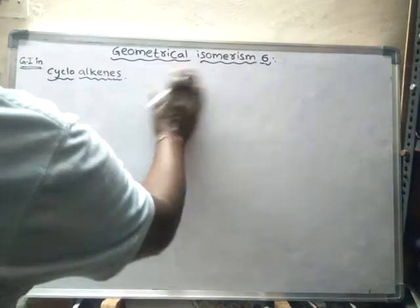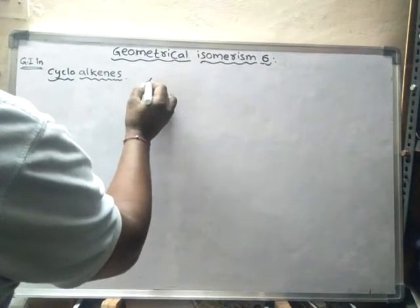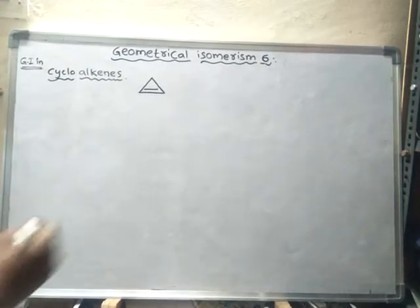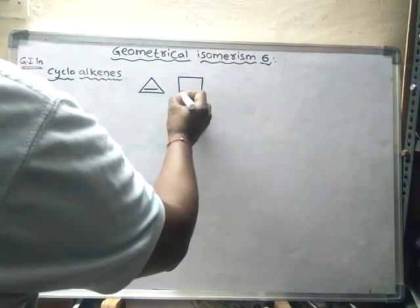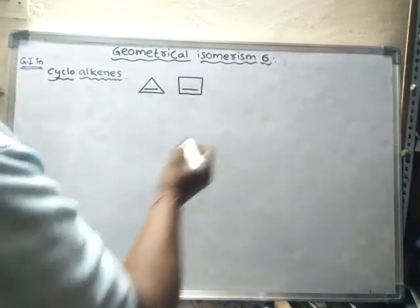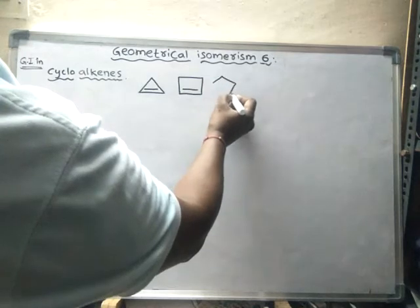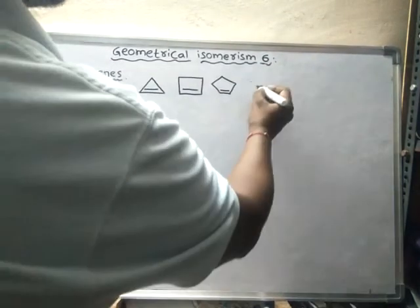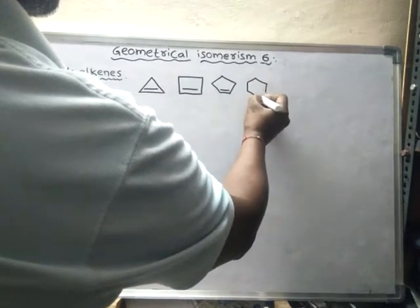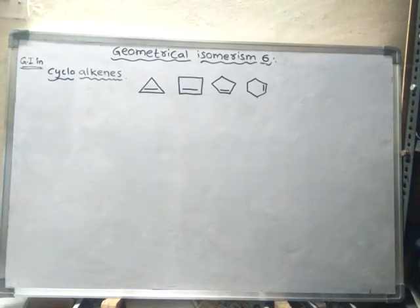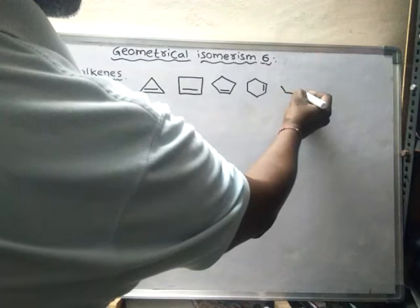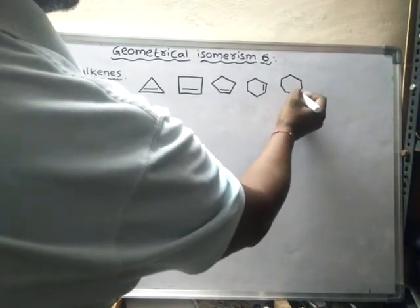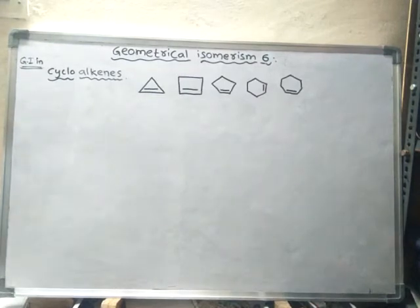Examples of cycloalkenes include cyclopropene, cyclobutene, cyclopentene, and cyclohexene.